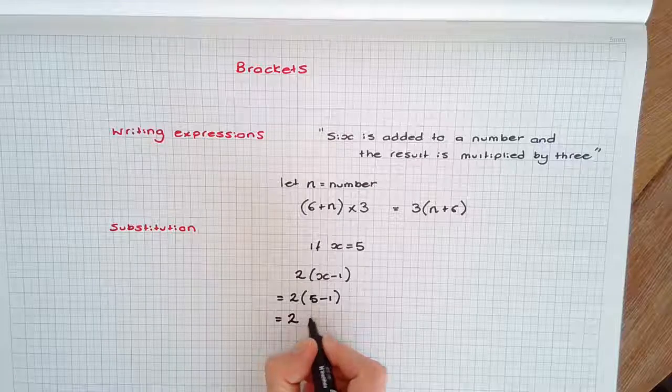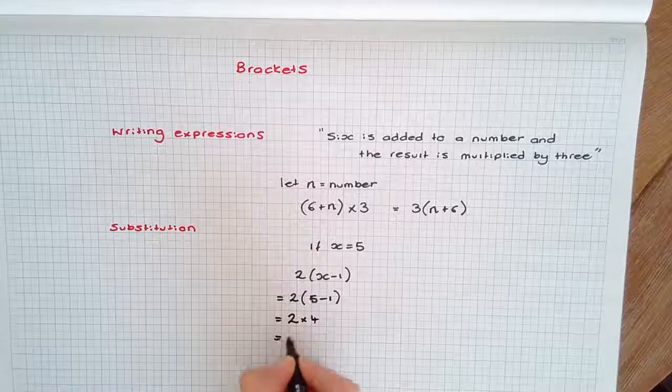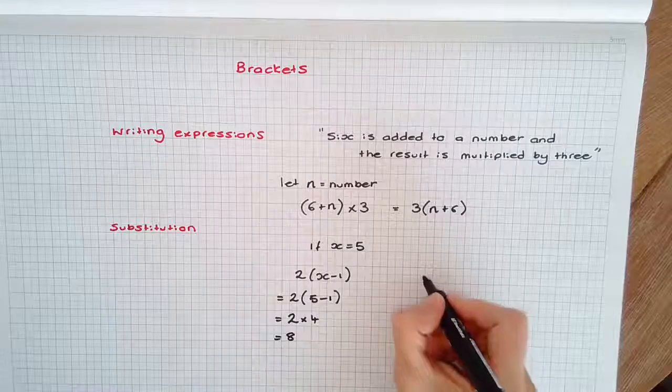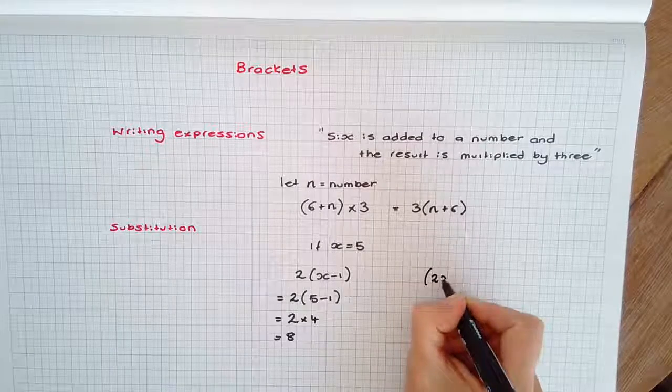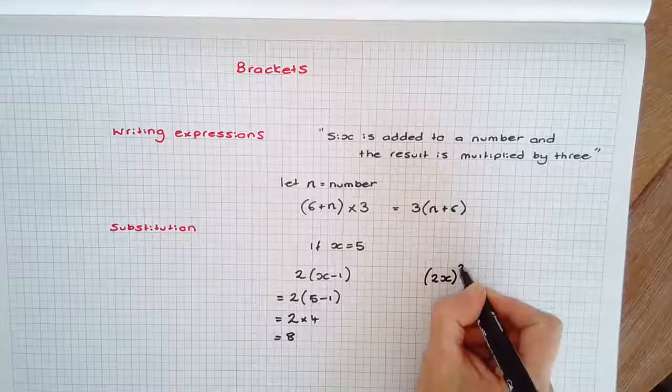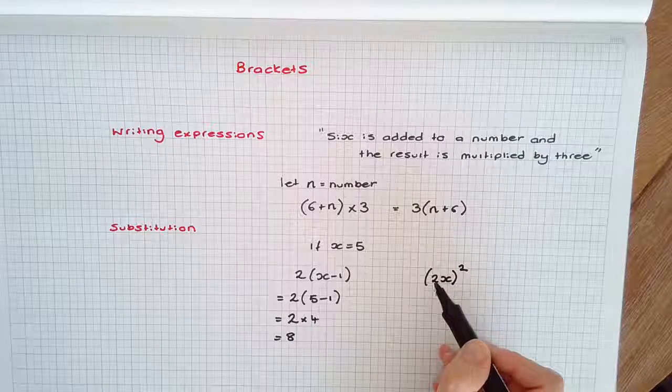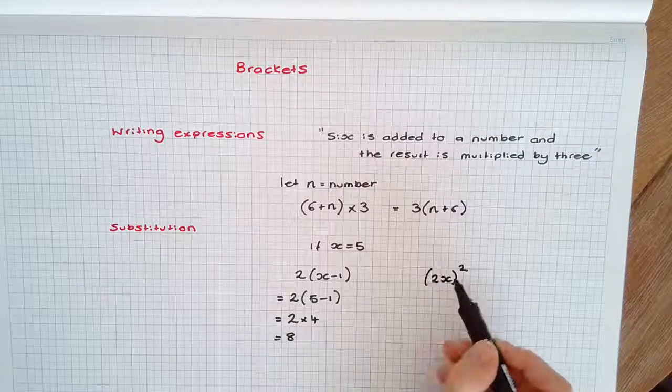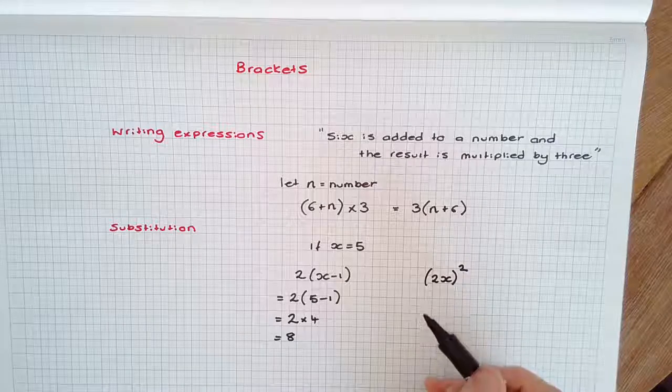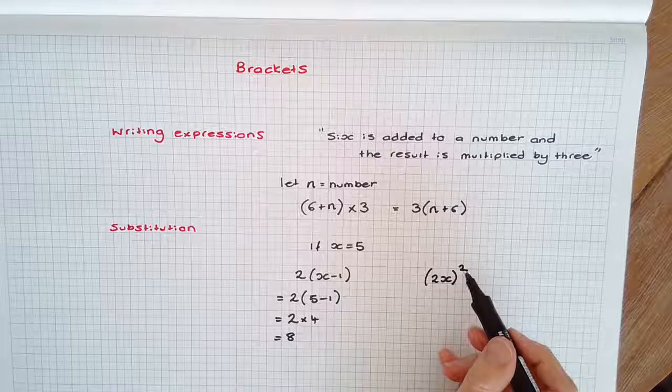A second example: (2x)². Now be careful when you're reading expressions with brackets and powers. You need to clearly look at what is actually being squared. In this case, 2x is being squared.